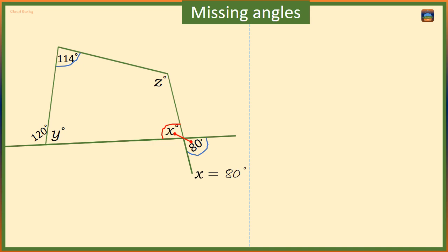Next we want angle y. We are going to take information from outside the quadrilateral. We know that angle 120 plus y should be 180 degrees. This is because together 120 and y make a straight angle.